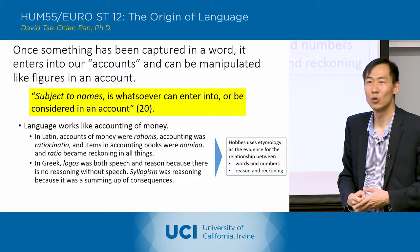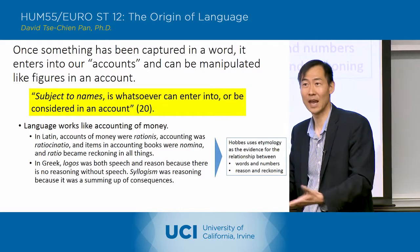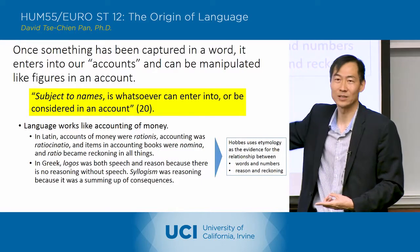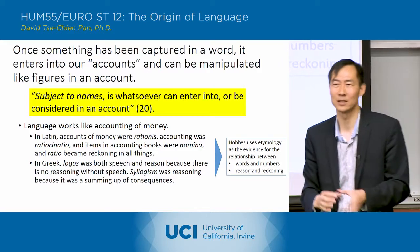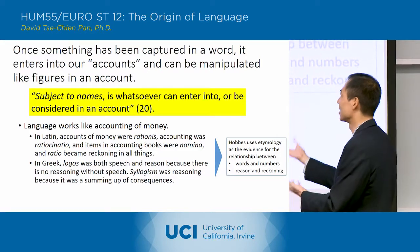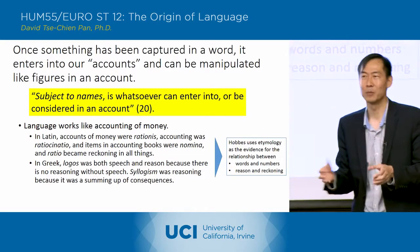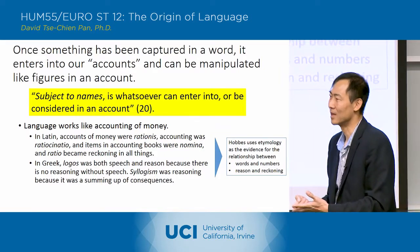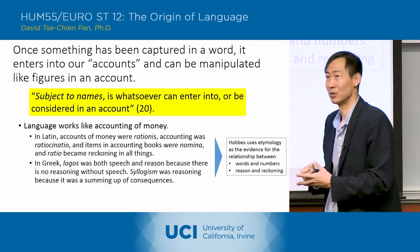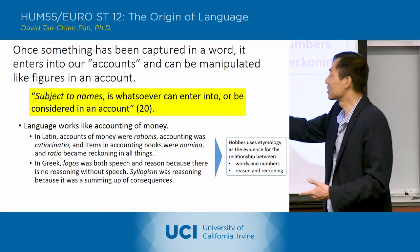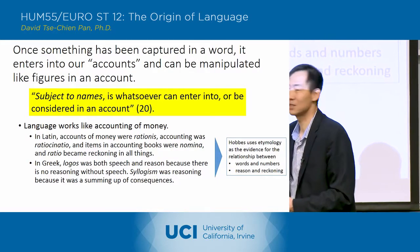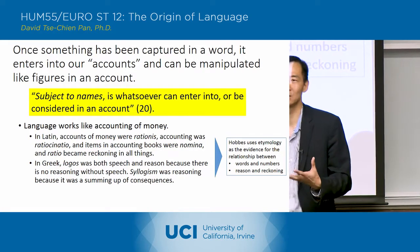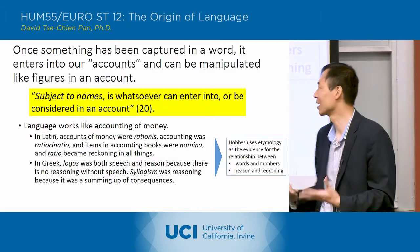And 'ratio' became 'reckoning' — reckoning in the sense of calculating, adding and subtracting — which is also the Latin word for reason. So that process of calculation is the process of reason. In Greek, 'logos' was both speech and reason, because there is no reasoning without speech. Syllogism was reasoning because it was a summing up of consequences — relating to this adding and subtracting.